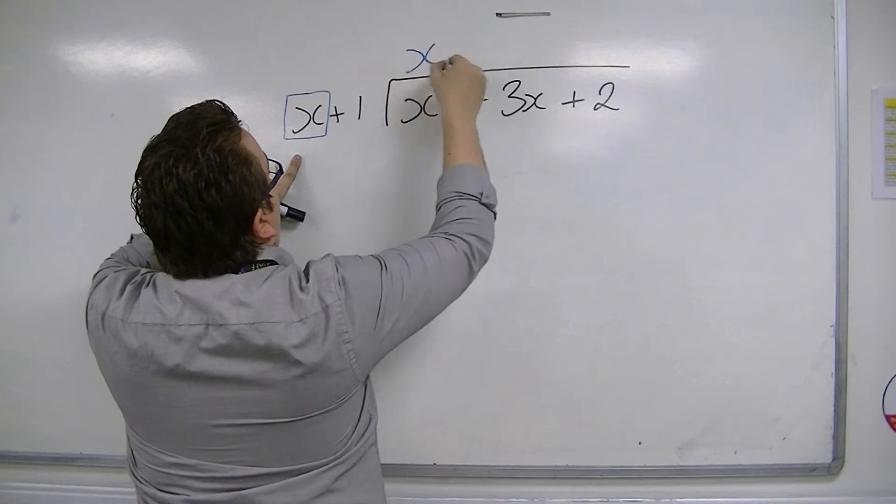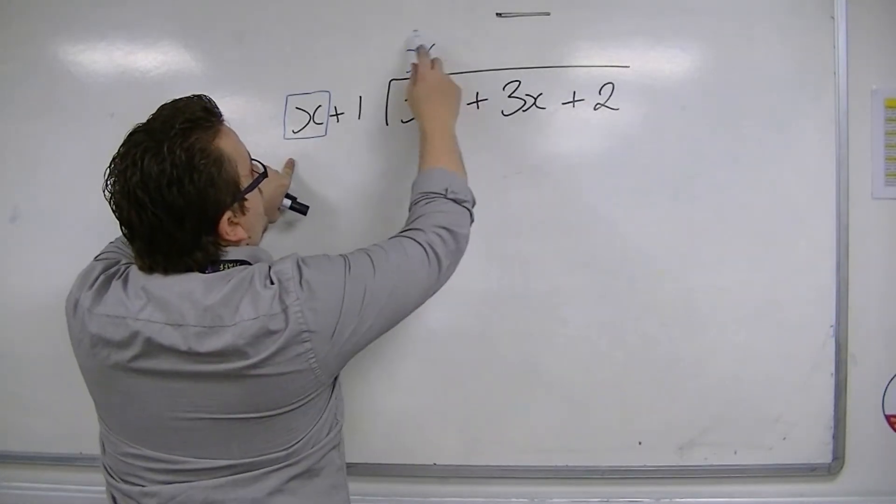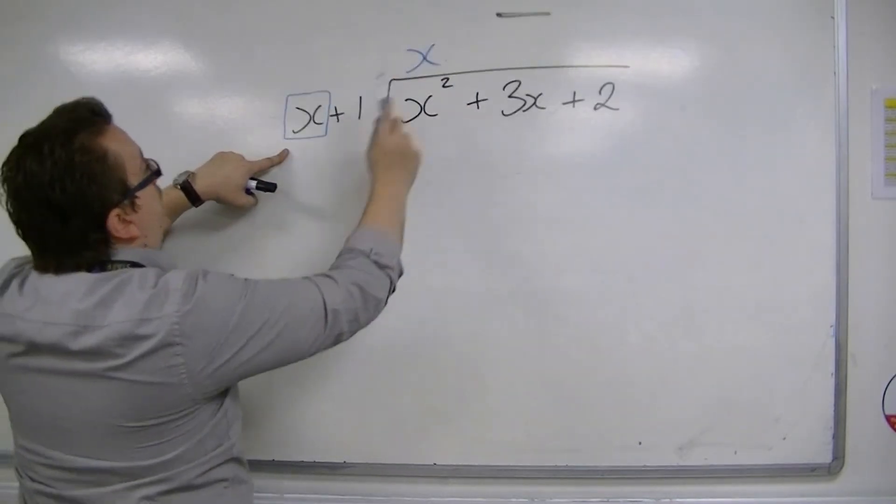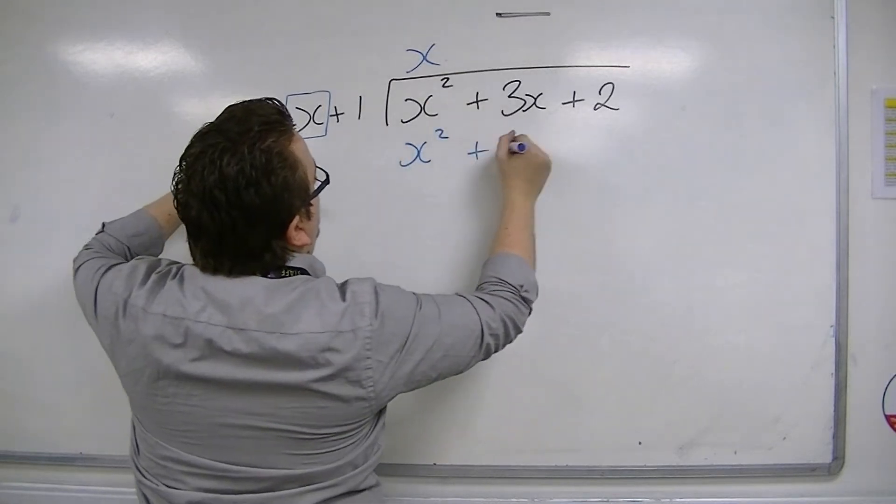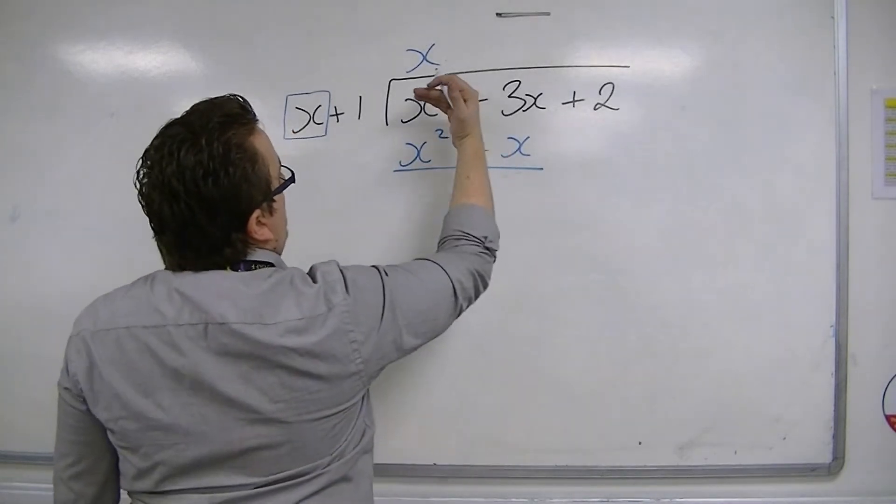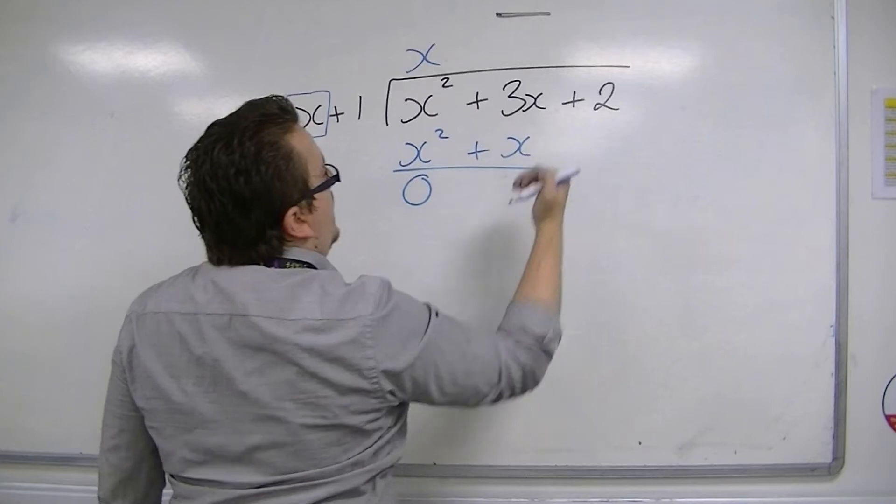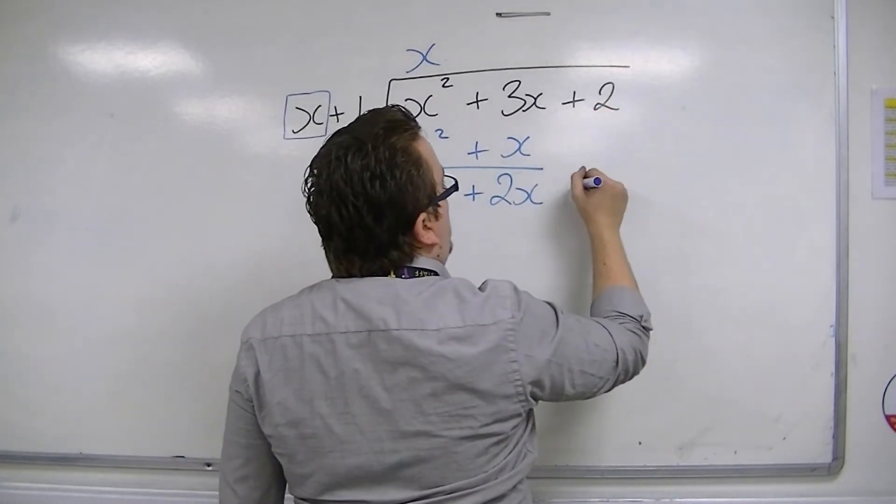And that's just 1x goes into x squared. You then multiply whatever your new term up here is by both of these terms. So we get x times x is x squared, and x times 1 is just x. Draw a line and then perform a subtraction. x squared take away x squared is 0. 3x take away x is 2x. And then bring the next term down.